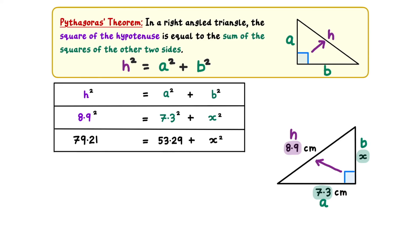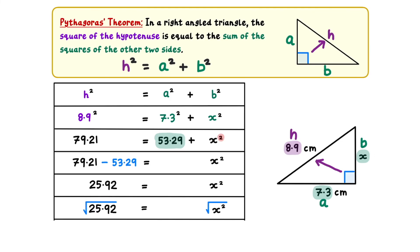In order to isolate our x term, there's two things we need to remove from the right-hand side, the plus 53.29 term, and the squared operation. To remove the plus 53.29, we must subtract 53.29 from both sides. Calculating the left-hand side tells us that 25.92 equals x squared. Now, to remove the squared operation, we must square root both sides. Rounded to one decimal place, this brings us to a final answer of x equals 5.1.